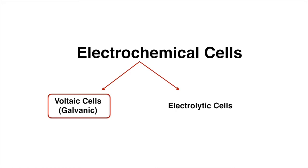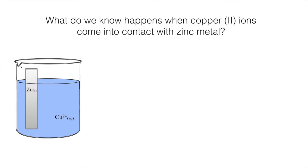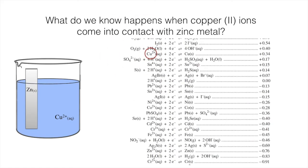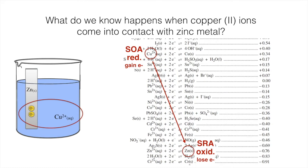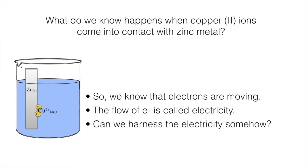This lesson is about Voltaic. Prior knowledge, what do we know happens when Copper 2 ions come into contact with zinc metal? There's my Copper 2 ions, there's a strip of zinc. We know from our chart of reduction half-reactions that Copper 2 ions react spontaneously with zinc. The strongest oxidizing agent is Copper 2, it gets reduced, which means it gains electrons. The strongest reducing agent is oxidized, which means it loses electrons. Essentially when Copper 2 comes in contact with the zinc strip, electrons are attracted from the zinc over to the Copper 2. We know electrons want to move to Copper 2. The flow of electrons is called electricity. So can we harness the electricity somehow?